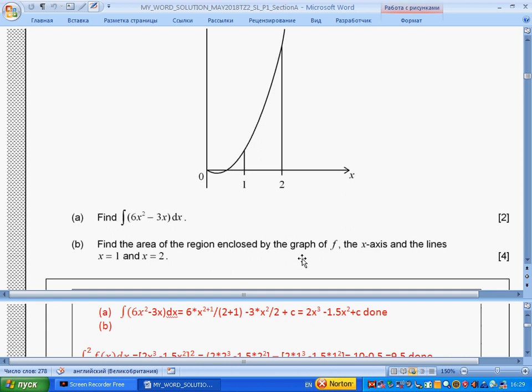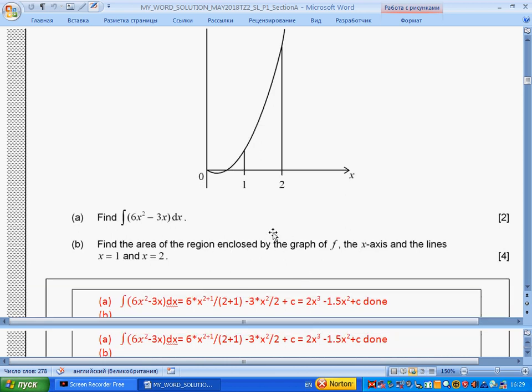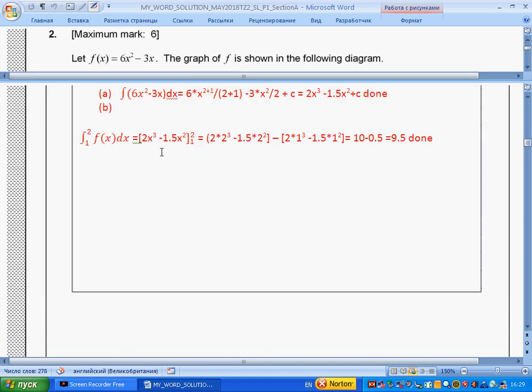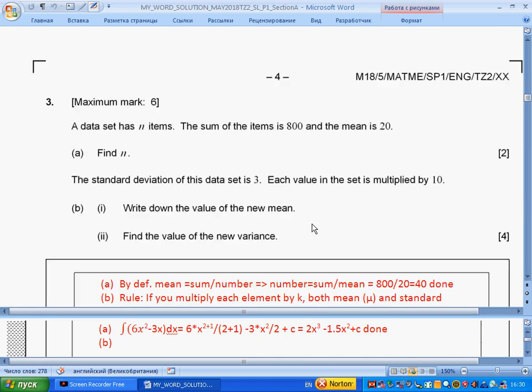Next, find the area of the region enclosed by the graph, x-axis, and the lines x=1 and x=2. The area will be the definite integral from 1 to 2 of our function. We substitute x=2 to get this expression minus x=1 substitution to get this expression. As a result, we get 9.5. This question is done.